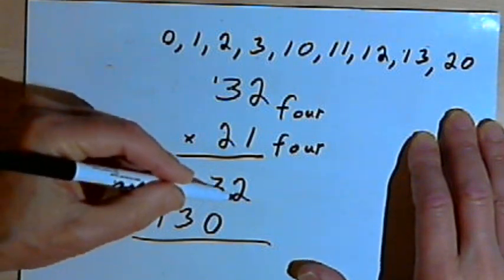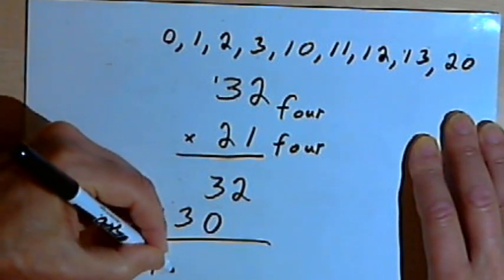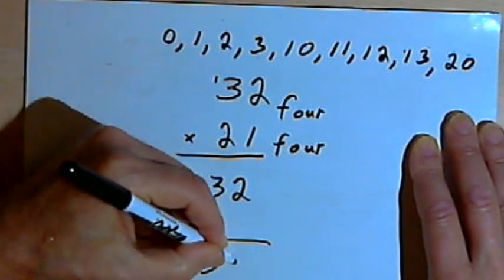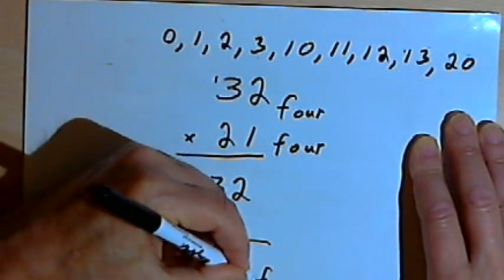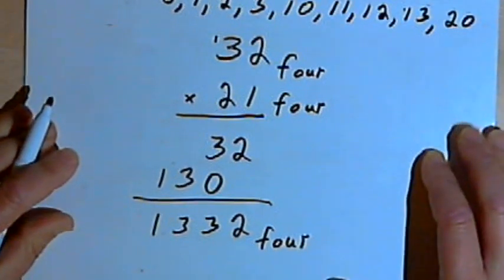And now all I have to do is add these numbers. So that looks pretty easy. That's just going to be 1332 base 4. Okay?